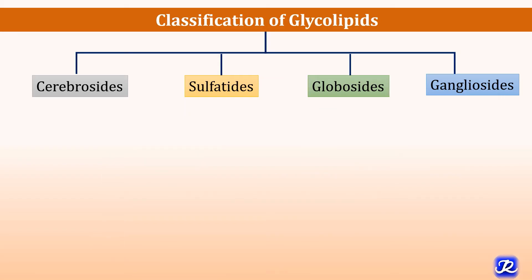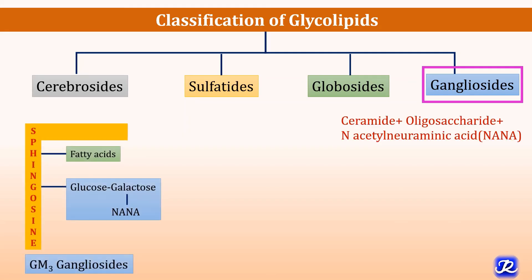The fourth type of glycolipid is gangliosides. Gangliosides are made up of ceramide plus oligosaccharide plus N-acetylneuraminic acid, that is NANA. This is the structure of GM3 ganglioside, in which you can see that sphingosine is attached to fatty acids — it is called ceramide — and to this, oligosaccharide is attached: glucose and galactose are present, and to this galactose, N-acetylneuraminic acid is attached.